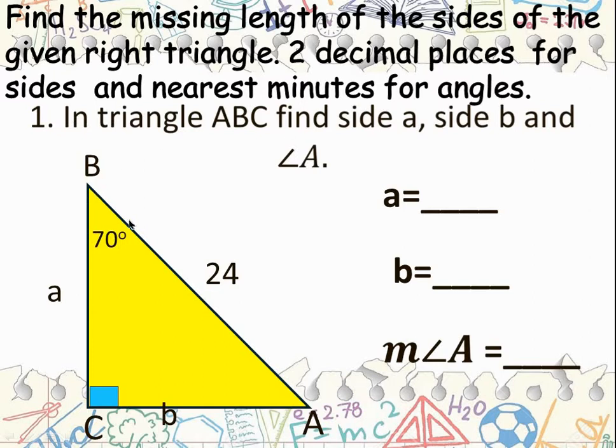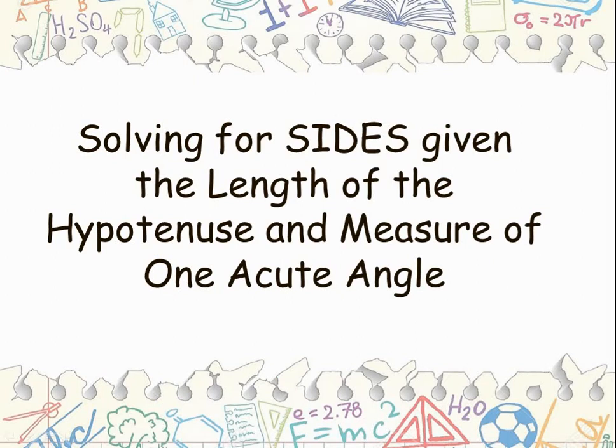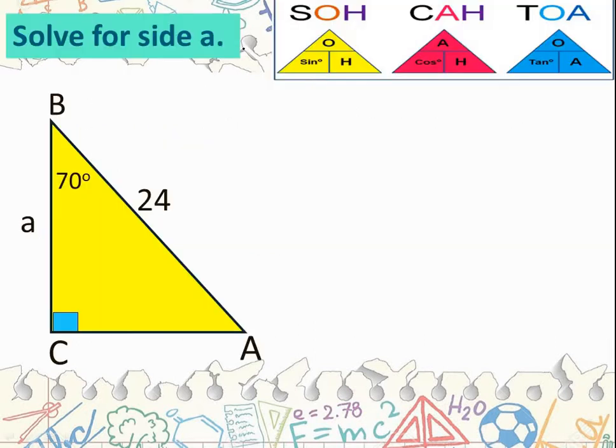We have triangle ABC, where the right angle is at C. Find side a, side b, and angle A. Now, how to solve for the sides given the length of the hypotenuse and the measure of one acute angle? Let's solve for side a. Step 1: Label the parts of the right triangle.